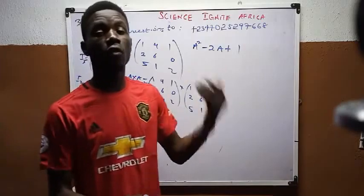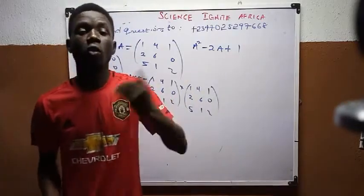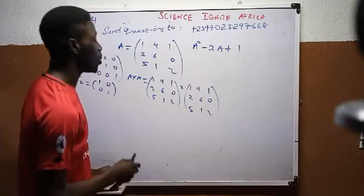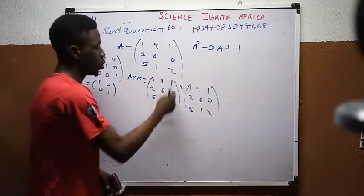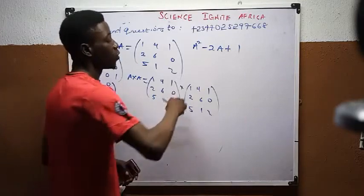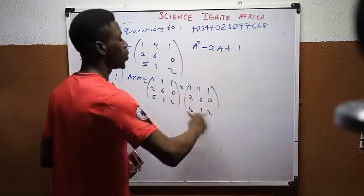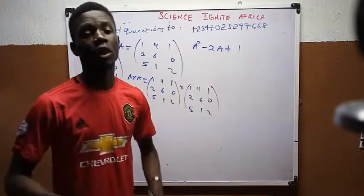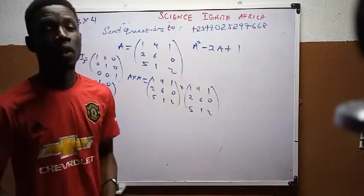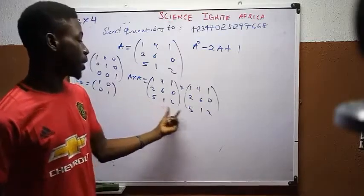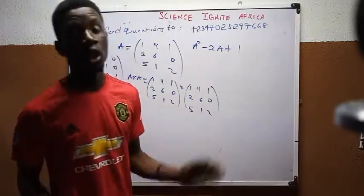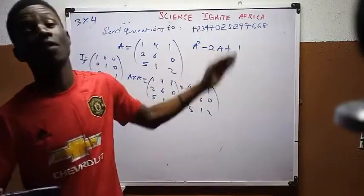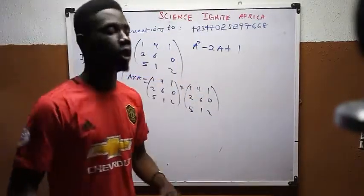First, check that multiplication is valid: the number of columns of the first matrix must equal the number of rows of the second. Here we have 3 columns and 3 rows, so multiplication is possible. Both matrices are 3×3, so the result will also be a 3×3 matrix.